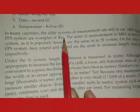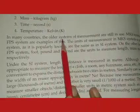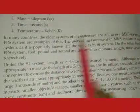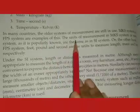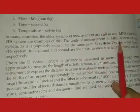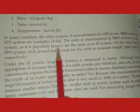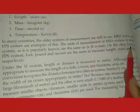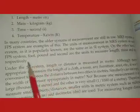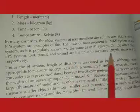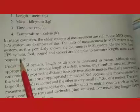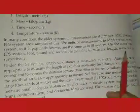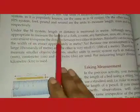In many countries the older systems of measurement are still in use. MKS system and FPS system are examples of this. The unit of measurement in the MKS or metric system is popularly known and same as in the SI system. On the other hand, in the FPS system, foot, pound, and second are the units to measure length, mass, and time respectively.